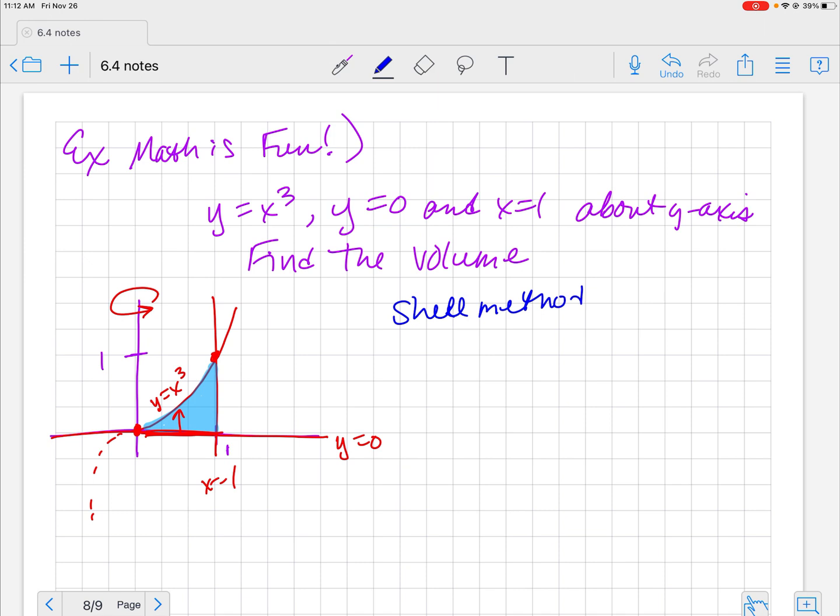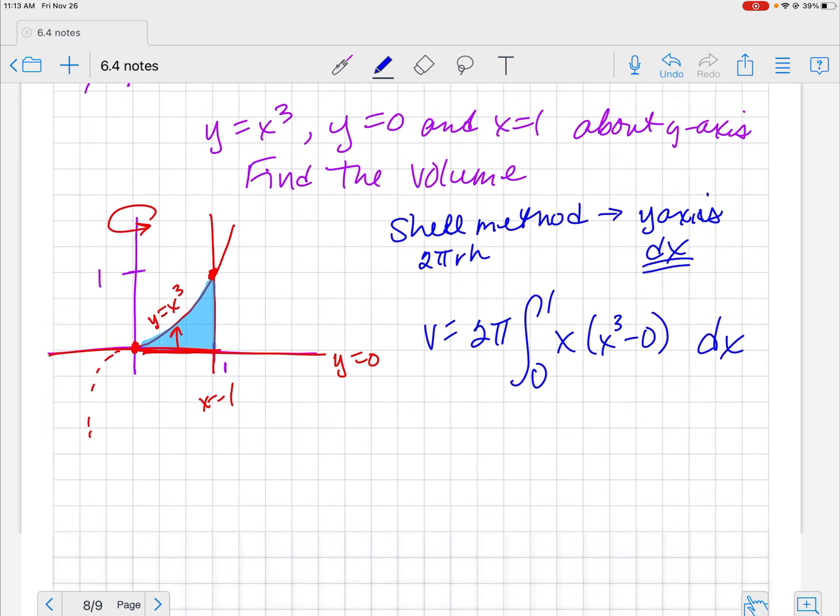If I have my shell method and I'm going about the y axis, that means my differential here is going to be a dx. So everything has to be in terms of x. And shell method is 2πrh. So my volume, I'm going to chuck that 2π out in front. And if I'm doing everything in terms of x, my bounds are in terms of x. My r here is in terms of x and then I have my top, which is x cubed minus my bottom, which is my best day ever because that's 0. And then this is an easy integration.